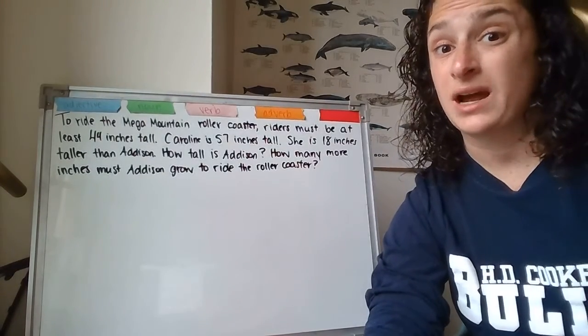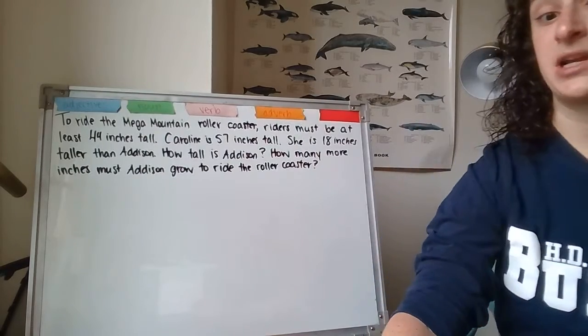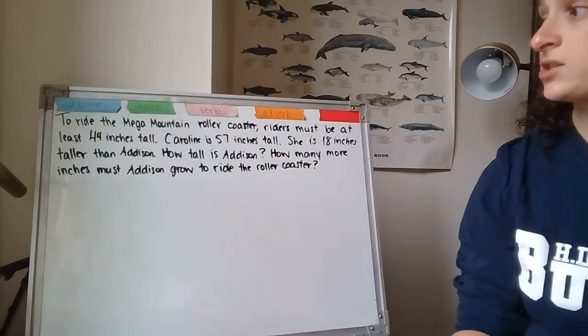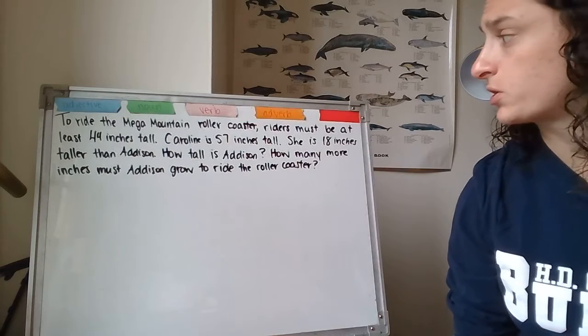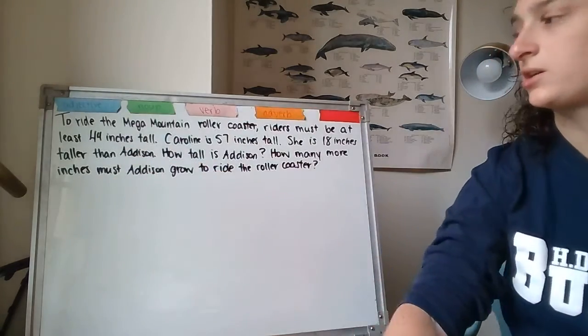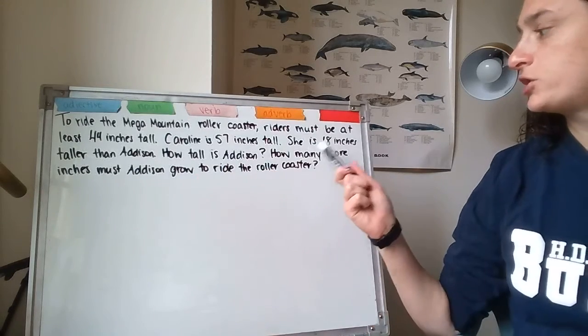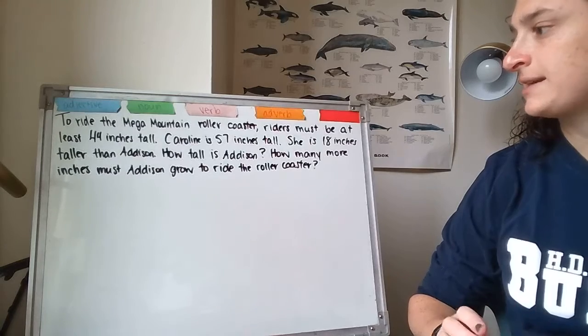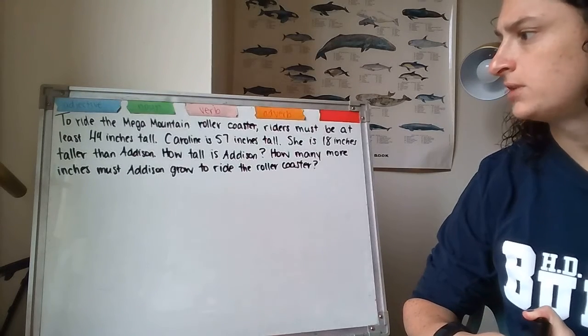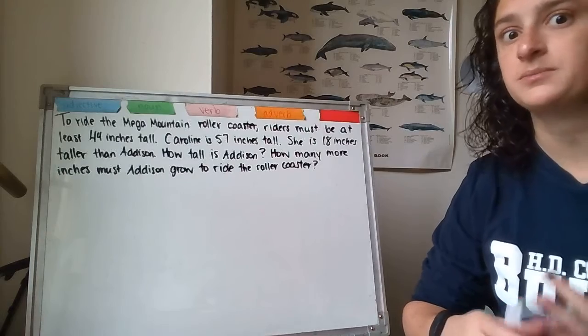So instead of doing that with you, I'm going to do the second application problem with you. And the second application problem is right here. And it says, to ride the Mega Mountain roller coaster, riders must be at least 44 inches tall. Caroline is 57 inches tall. She is 18 inches taller than Addison. How tall is Addison? How many more inches must Addison grow to ride the roller coaster?